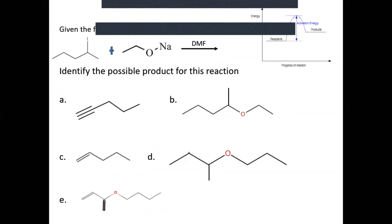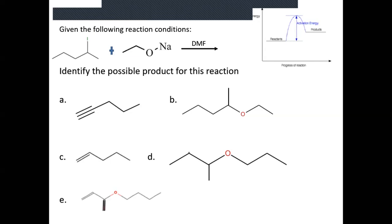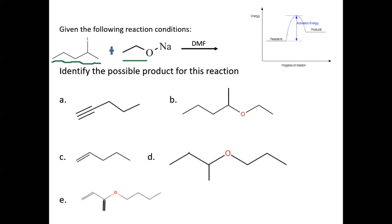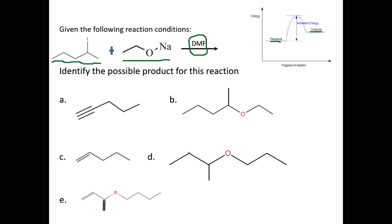We've also talked about substitution and elimination reactions. Here we're given some conditions and asked to identify the possible product. We have a secondary alkyl halide, an alkoxide — which is a strong base, strong nucleophile — and an aprotic solvent. The energy diagram shows that the products are higher than the reactants, indicating an endothermic reaction.